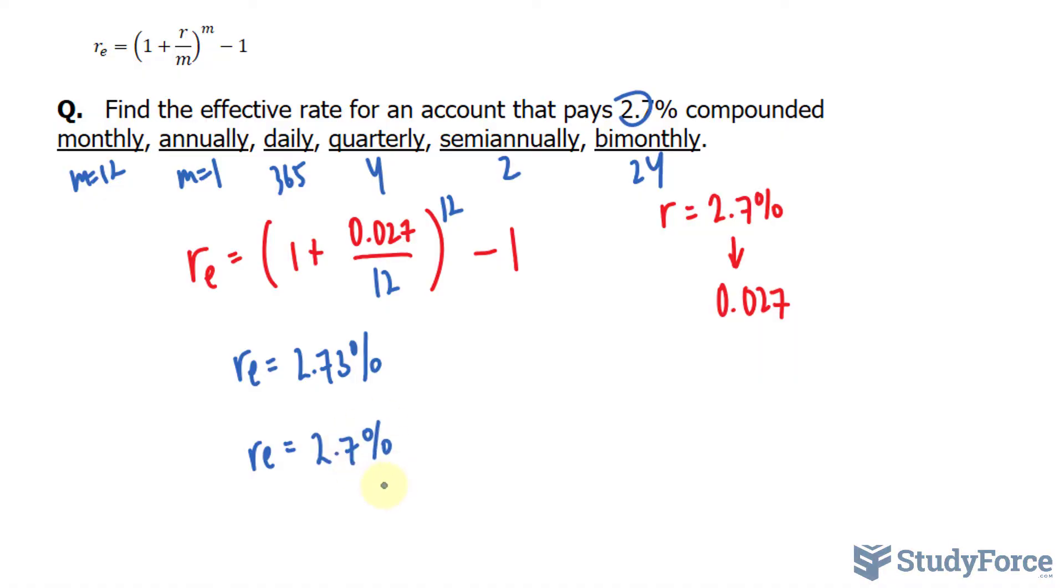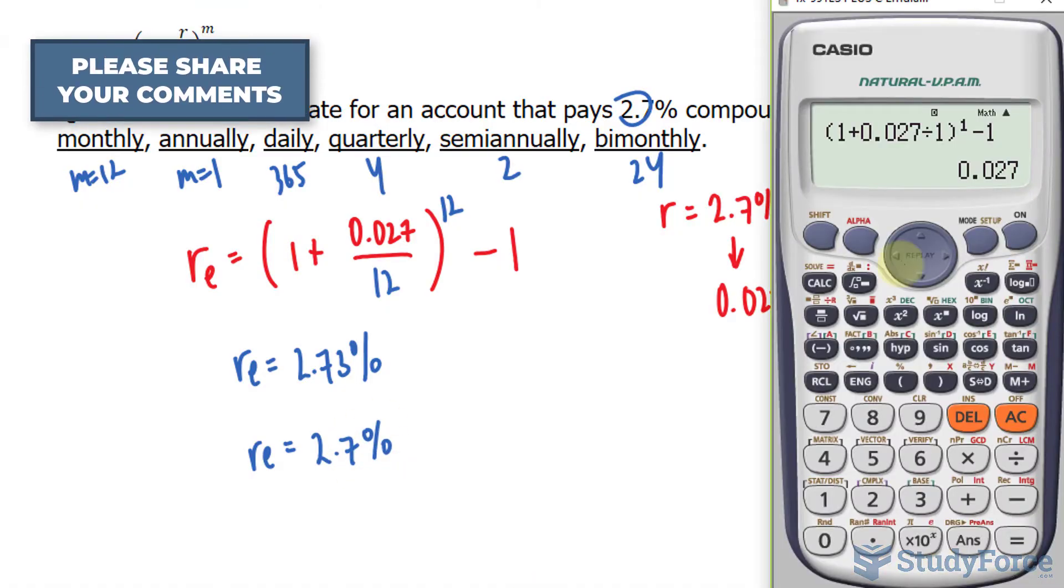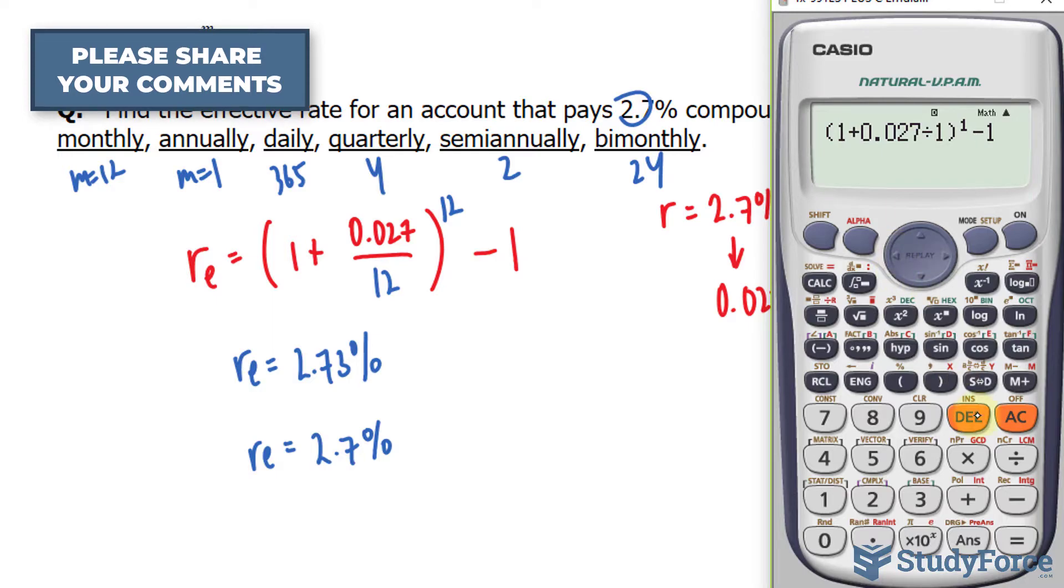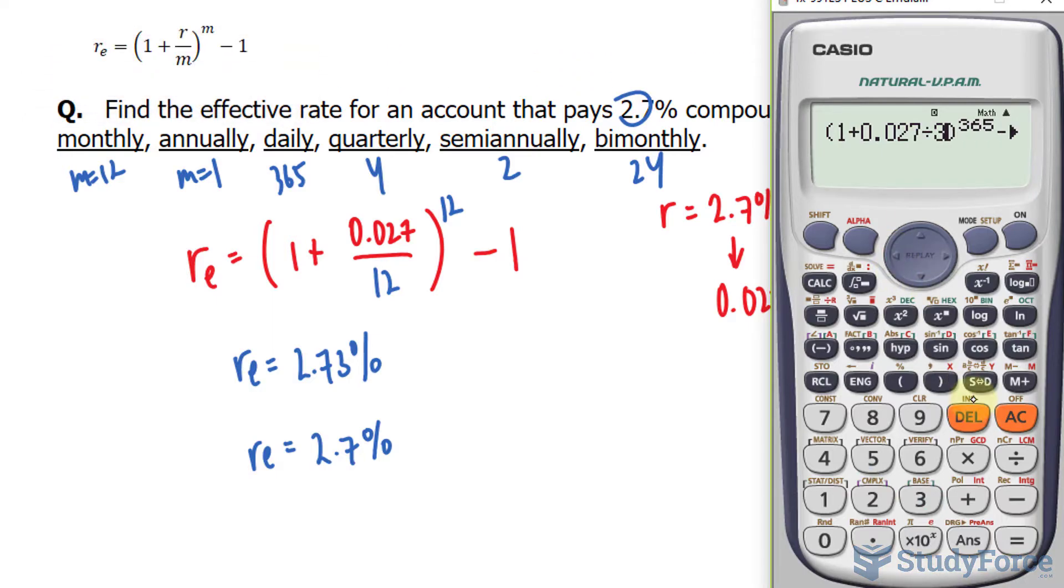What about daily? We'll switch this to 365. That to 365. And multiplying this by 100 gives us the same thing as monthly.